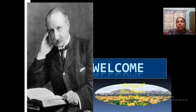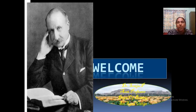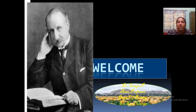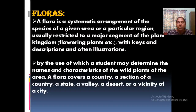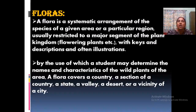Welcome to all. We are going to begin the next module, that is taxonomical literature. We have now studied classification systems, nomenclature, and everything. Now we are going to study how to identify a plant. In order to identify a plant, there are particular books, monographs, flora, herbaria, botanical gardens, etc. Among the most important of them is flora.